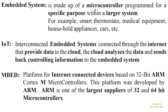An embedded system is made up of a microcontroller programmed for a specific purpose within a larger system. For example, you've got smart thermostats, medical equipment, household appliances like washing machines, dryers, and even refrigerators, and cars. Cars will have a number of embedded systems — one for heating, ventilation, air conditioning, a different one for electronic fuel injection. There's probably about 15 to 20 different systems in your car, and these are all examples of embedded systems.